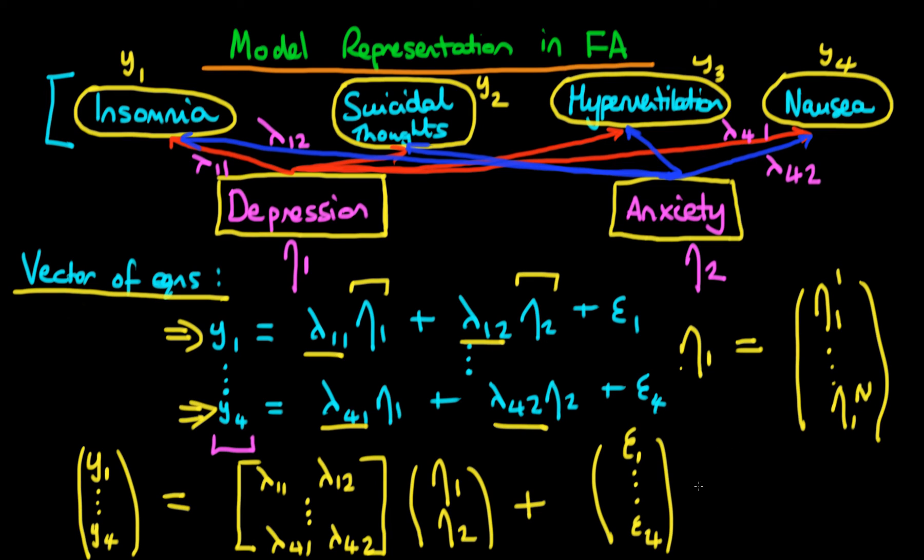So essentially what we can do here is we can actually replace our system of four equations by a single vector equation which is just that y is equal to some matrix lambda or capital lambda which is this one here times our vector of unobserved characteristics plus our vector of disturbance terms epsilon. And note that this is a very compact way of writing what in principle is actually quite a complicated system of equations.